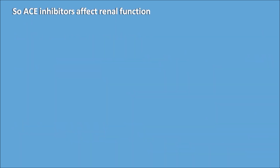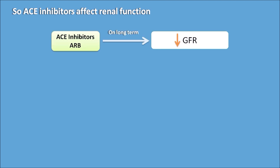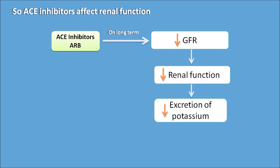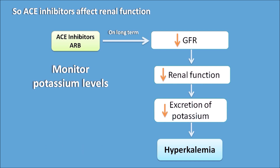ACE inhibitors affect renal function — when used long-term, they decrease renal functionality. ACE inhibitors and ARBs on long-term use decrease the glomerular filtration rate, which decreases renal function, thereby decreasing the excretion of potassium and leading to hyperkalemia — raised potassium levels in the body. That is why when these drugs are given for long-term use, potassium levels must be monitored.